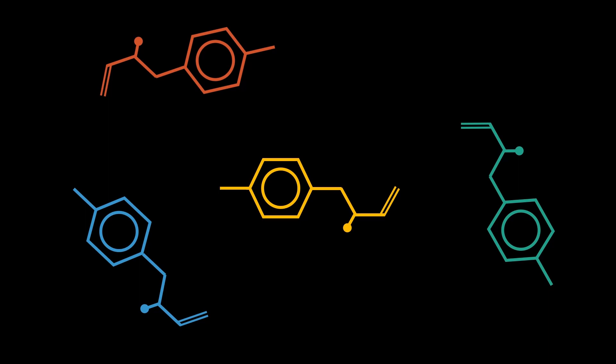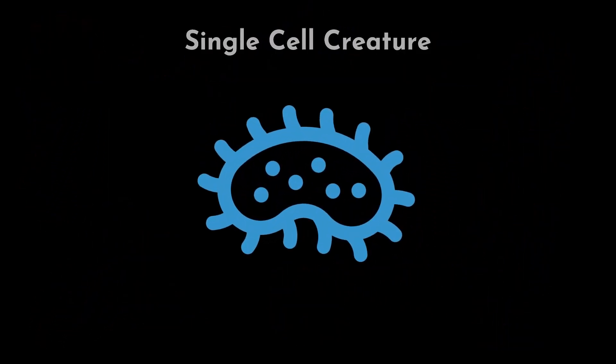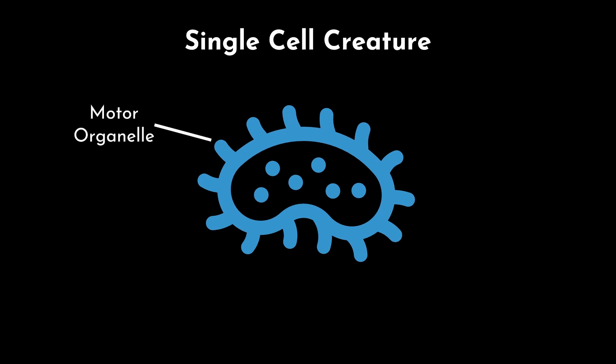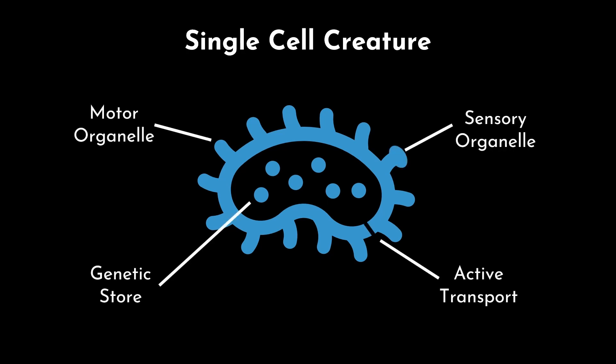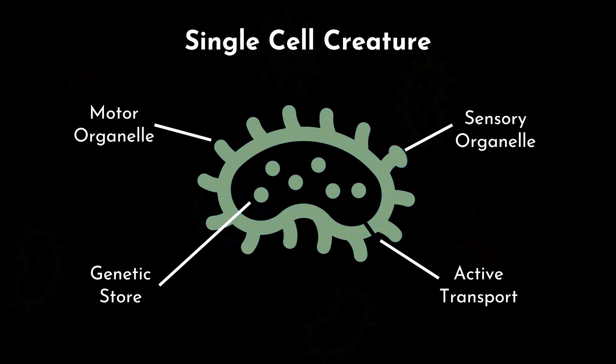Over the next million years, these complex arrangements of proteins and chemicals came to form single-celled creatures. In even more time, they developed simple organelles to move, grab, sense, store genetic information, and transport specific chemicals into and out of the cell boundary. Some even developed simple verveic capabilities, such as sensory and generative units, used to move, control, and detect the world around them.